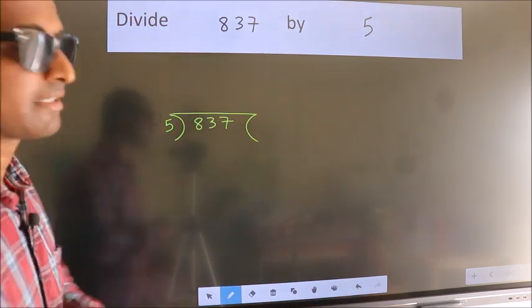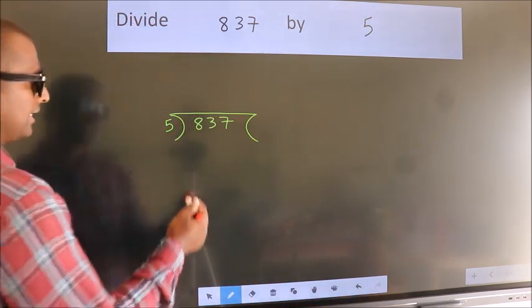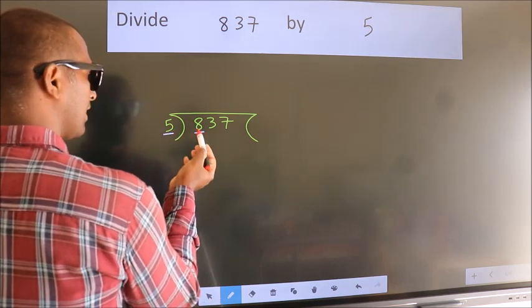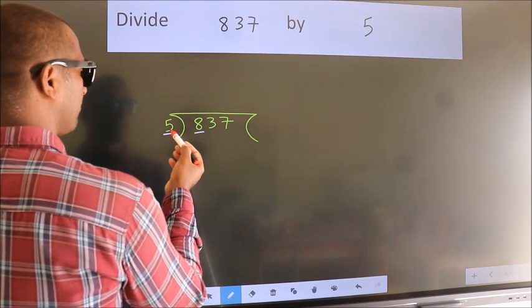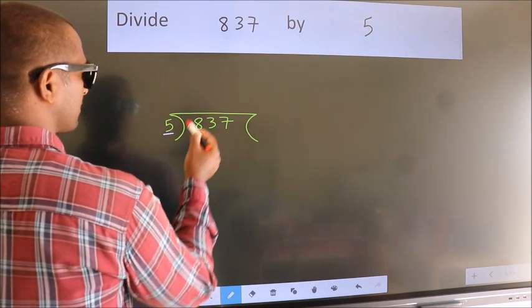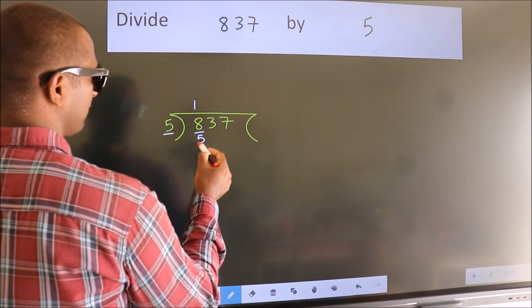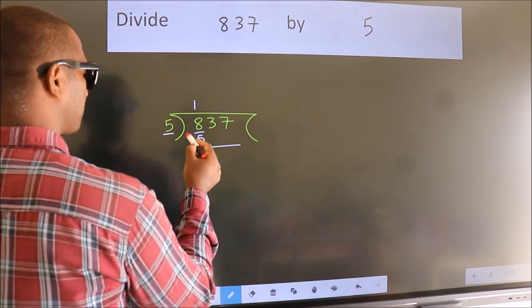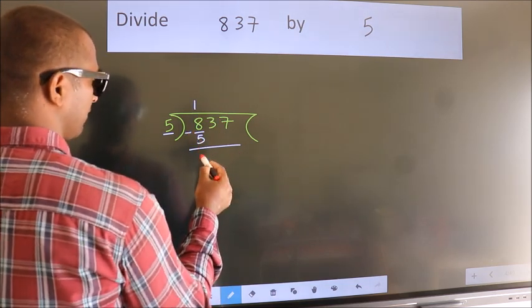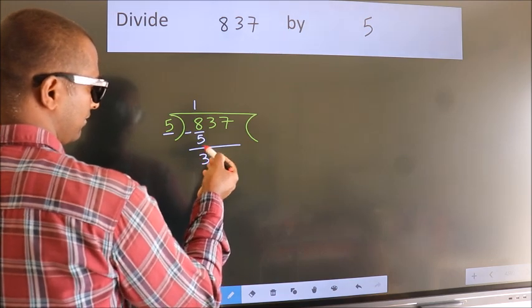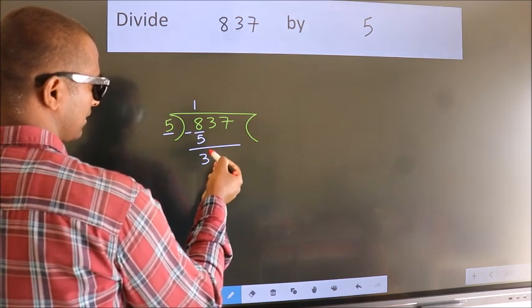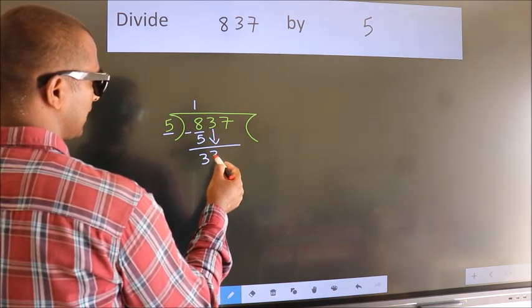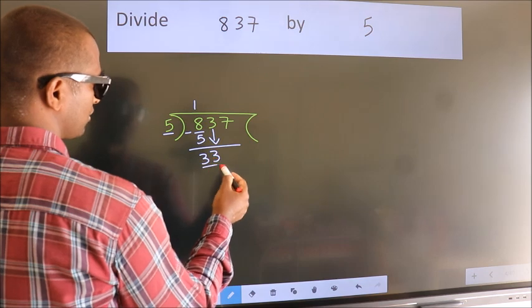Next, here we have 8, here 5. A number close to 8 in the 5 table is 5 once, which is 5. Now we should subtract — we get 3. After this, bring down the beside number. So 3 down, so 33.